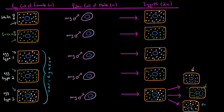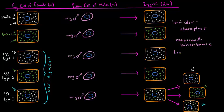The take-home message is that because the gene for leaf color is located in the chloroplast, it exhibits maternal inheritance, which is a type of extranuclear inheritance — because this inheritance involves DNA that's outside of the nucleus. This particular trait is not passed down through the male at all; it's only passed down through the female. That is because the chloroplasts come only from the egg cell. The sperm cell does not contribute any chloroplast to the zygote — it only contributes DNA in the nucleus. Therefore, leaf color in the four o'clock plant exhibits maternal inheritance.